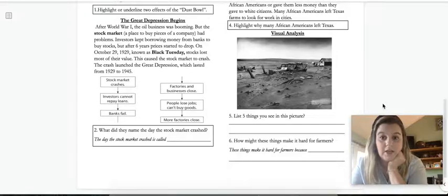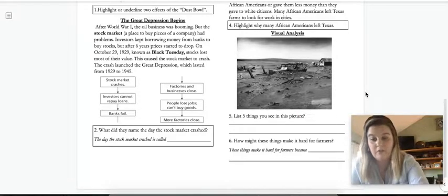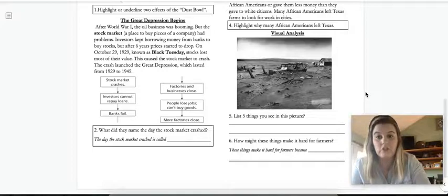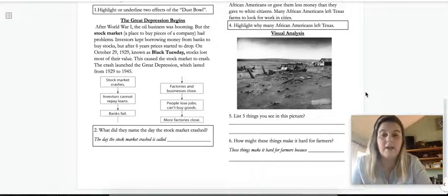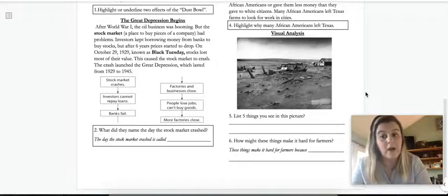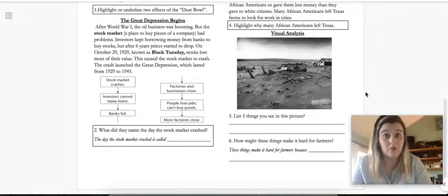So last thing, the visual analysis. So this is a picture of a farm during the Dust Bowl. So number five says, list five things you see in this picture. So I want you to just write down, you don't have to make them a sentence, just make bullet points of five things that you see in the picture. Now number six says, how might these things make it hard for farmers? So those five things you listed, why might they make it hard for farmers? These things make it hard for farmers because, so this is your opinion, so there's no wrong answer. So I want you to tell me, why might those things you listed make it hard for farmers to work?